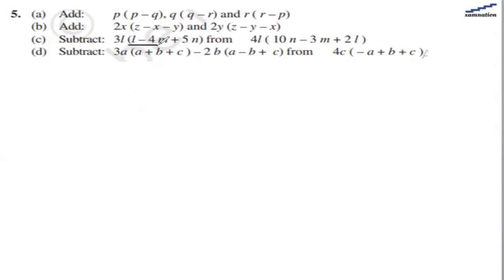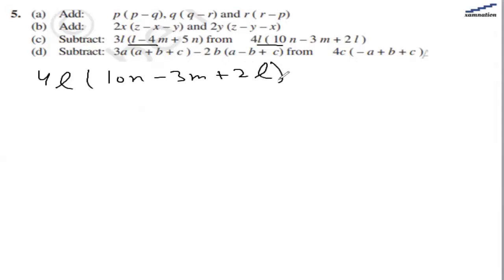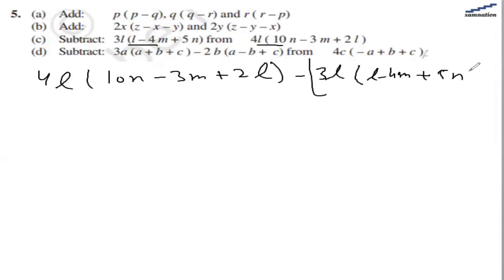For the third part, we need to subtract one expression from the second expression. Let's write the second expression first: 4l·10n minus 3m plus 2l. We are going to subtract 3n, so let's write everything in brackets: l minus 4n plus 5n.